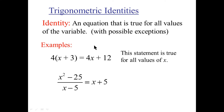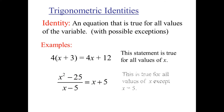Here's another one: x squared minus 25 over x minus 5 equals x plus 5. This is true for almost all values of x — there's only one value it's not true for. If x equals 5, it's not true. Any other value of x it's true for, so it's an equation that has infinite numbers of solutions.